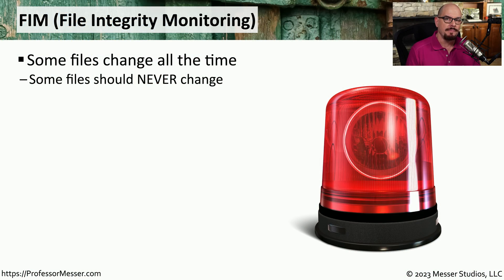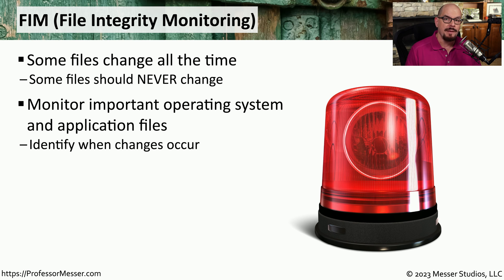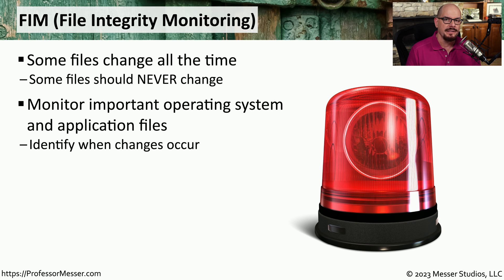If you've ever managed a server or an application instance, then you know that there are a group of files associated with that application that never change and other files that seem to change all the time. Usually, the application executables and libraries that make up this application would rarely change unless the application was upgraded. There may be data files and cached information that changes constantly, but there is a core set of files that would rarely change. This means it would be very good to know from a security perspective if these files that should never be changing are suddenly being modified, and there are ways to provide monitoring and alerting if any of those files change.